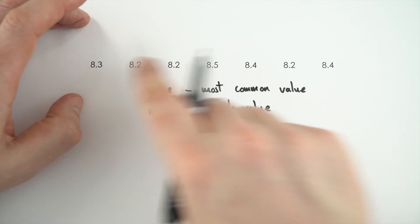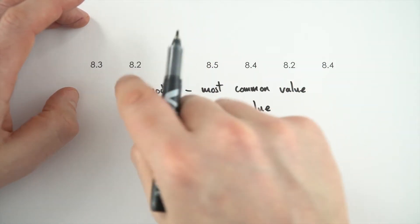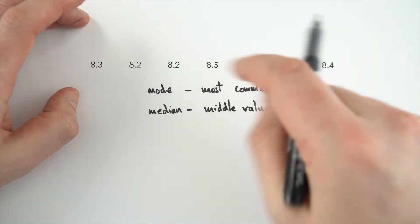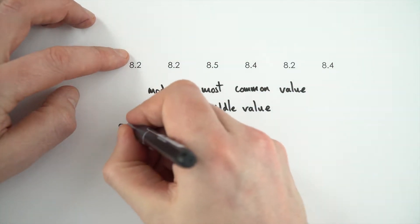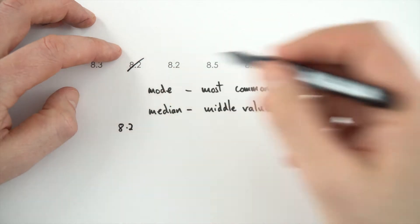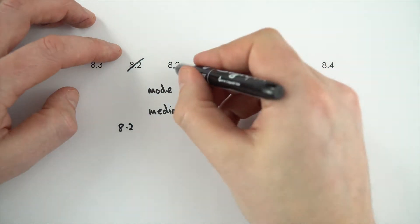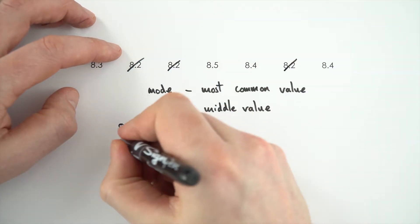Now to work these out with some data like we have up here, what I'm going to do is I'm going to write this out again, but I'm going to do it in ascending order. So starting at the smallest, so you've got 8.2 here. I'm just going to cross through this so I know I've actually counted it. We've then got another 8.2 and another 8.2.